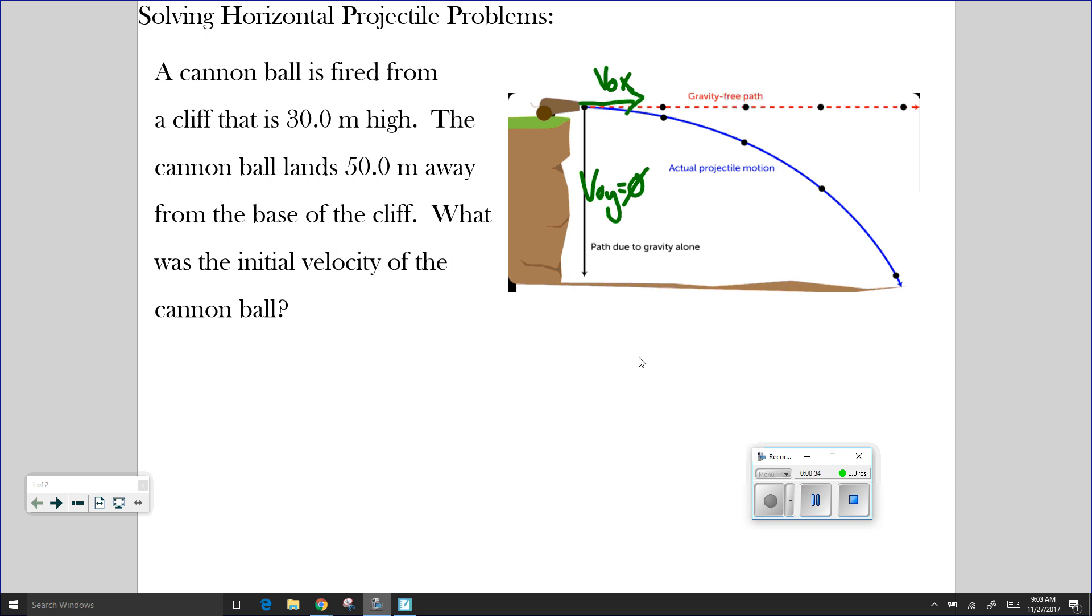So the example problem that I'm going to work through with you says a cannonball is fired from a cliff that is 30.0 meters high. The cannonball lands 50.0 meters away from the base of the cliff. What was the initial velocity of the cannonball?